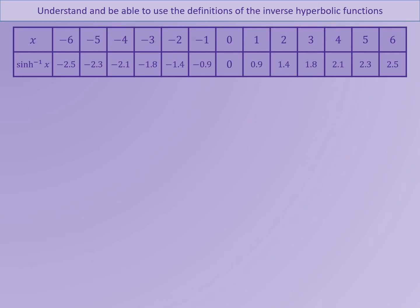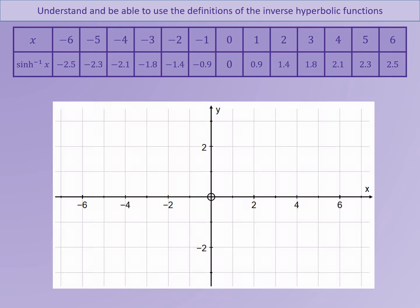This is the table of values for the inverse sinh function. Plotting these points on some axes, we can see that this is actually a reflection of the y equals sinh x graph in the diagonal line y equals x. This is because when we are considering inverse functions, an inverse function is always a reflection in this line.